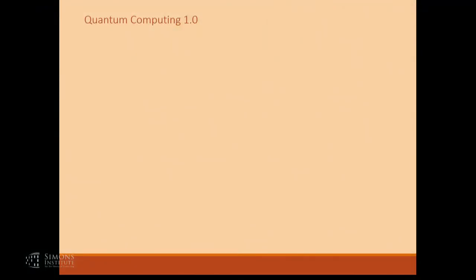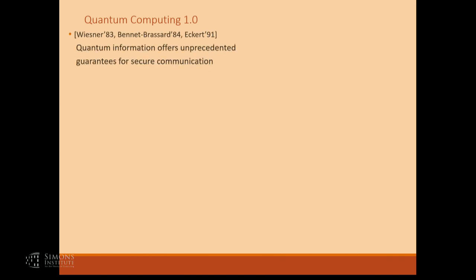So the field of quantum computing was born in the early 80s based on two major discoveries. The first major discovery is the fact that by encoding classical information into quantum degrees of freedom of physical systems, you can achieve secure communications with levels of security that do not have any classical equivalence. This is called — sometimes slightly abusively — unconditional security, but it's security based on physical principles instead of on computational assumptions. That's quantum key distribution.